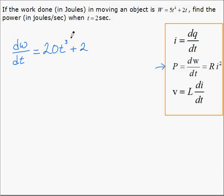The instant we're interested in is T equals 2. So W prime at 2 is equal to 20 times 2 cubed plus 2, which is 162 joules per second.